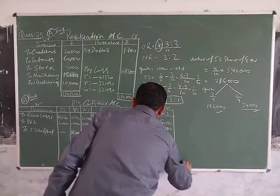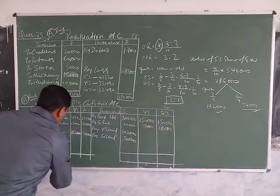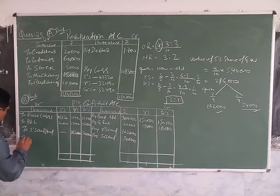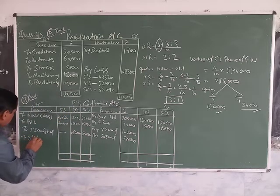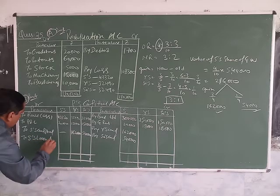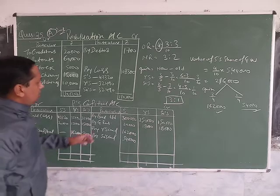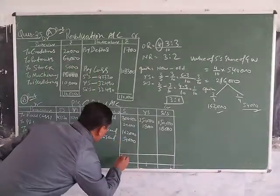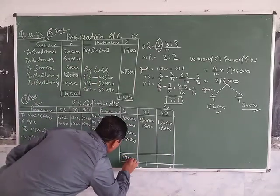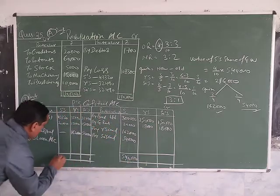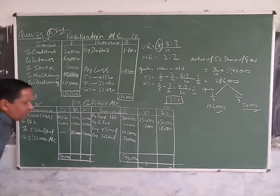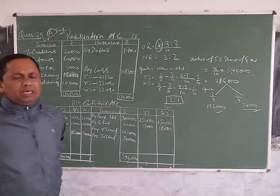After that, we are balancing the accounts. While balancing, we transfer to S's loan account, where the total on this side is 5,40,000.